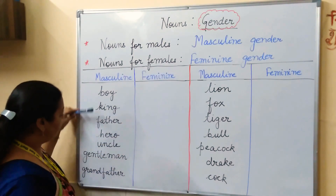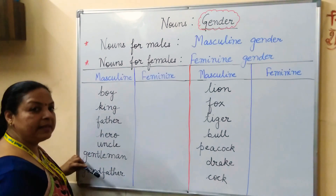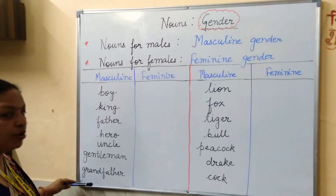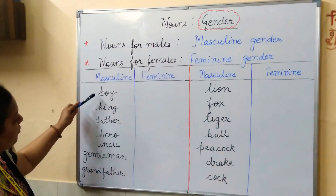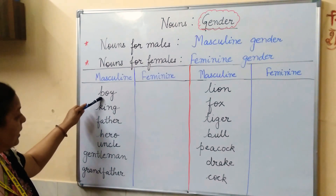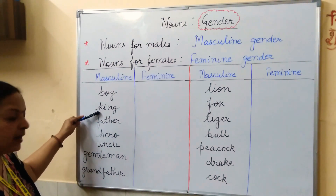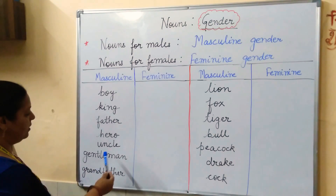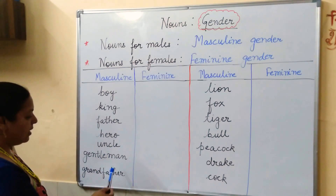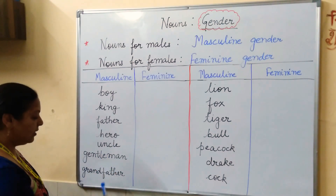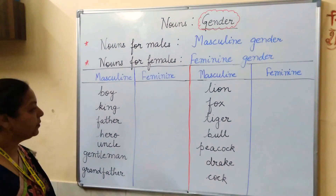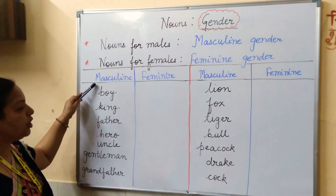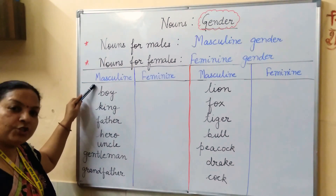I have written some examples of masculine gender. Let's read. The examples are: boy, king, father, hero, uncle, gentleman, grandfather. All these persons come in the category of masculine gender.